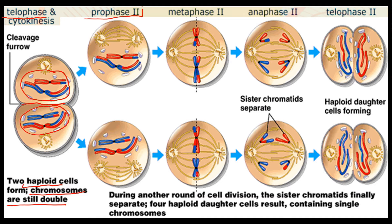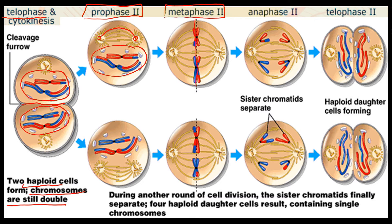Then the cell goes into the second meiotic division. In prophase II a new spindle is forming — you can see a new spindle is forming. The chromosomes are already there so they don't have to form again. As the cell goes into metaphase II, the chromosomes arrange along the middle of the cell, but this time the chromosomes arrange themselves individually along the middle. In anaphase II, when the cells move away from each other, the chromosomes split and the chromatids move to each pole.